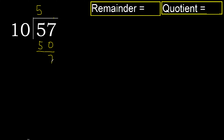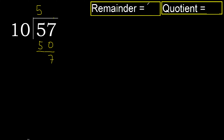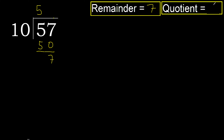Subtract: 57 minus 50 gives 7. That is not a number to continue, therefore finish. The quotient is 5 and the remainder is 7.